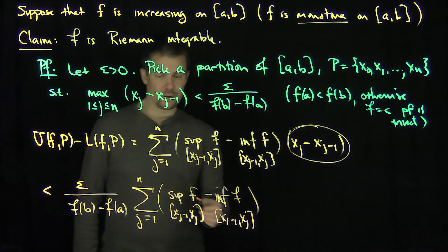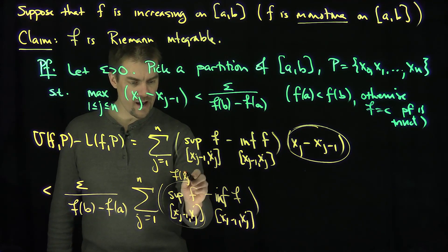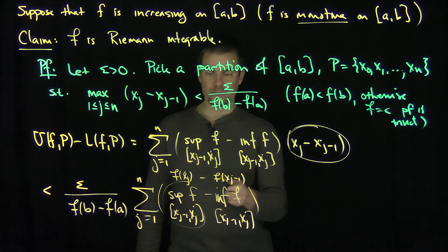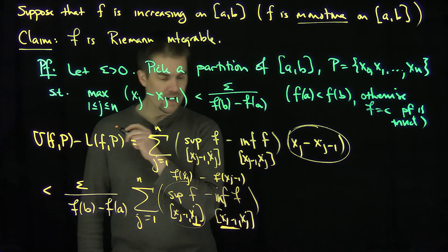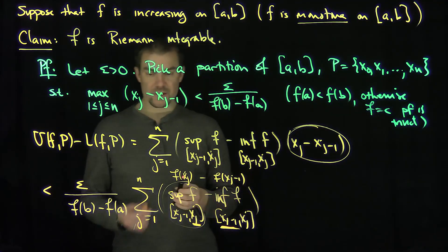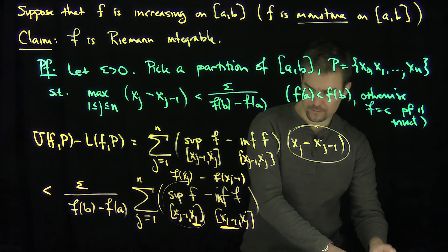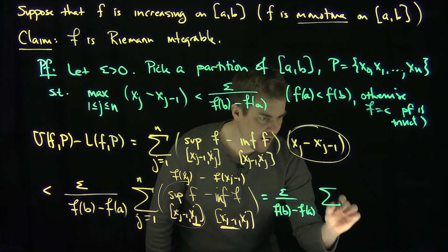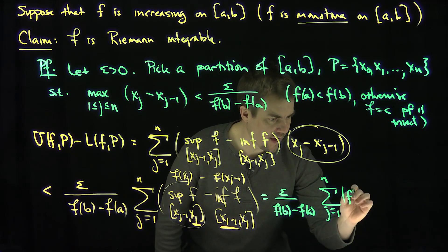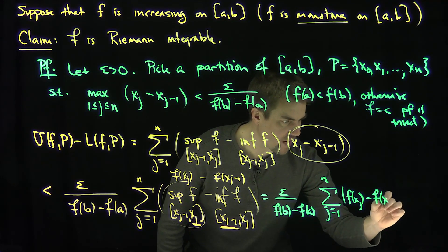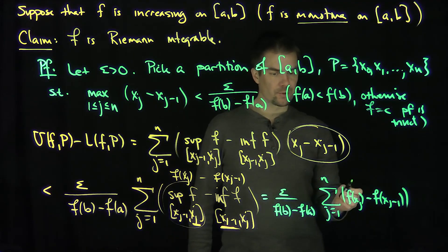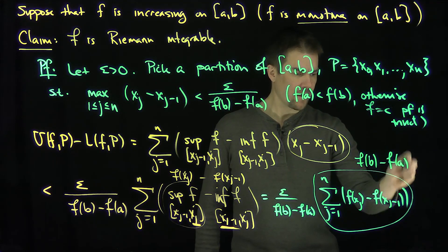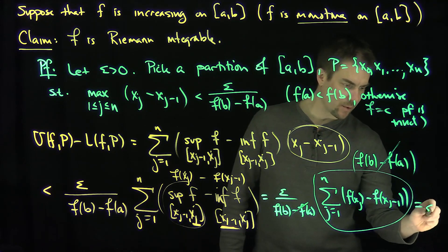Since the function is increasing, the supremum occurs at f(xj) and the infimum occurs at f(xj-1). So this becomes epsilon over (f(b) minus f(a)) times the sum from j=1 to n of (f(xj) minus f(xj-1)). That sum telescopes to f(b) minus f(a), which cancels with the denominator, giving us exactly epsilon.